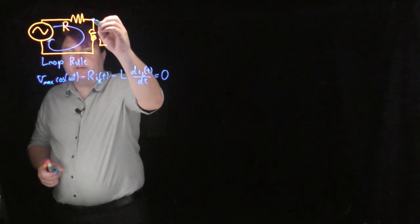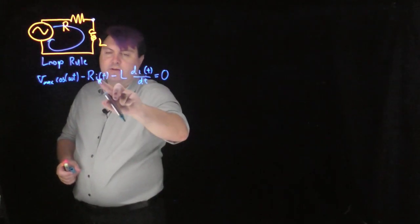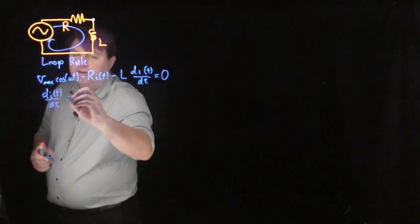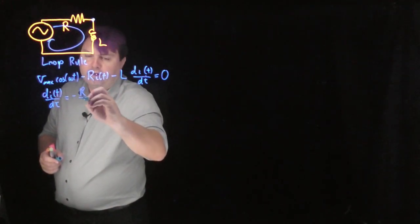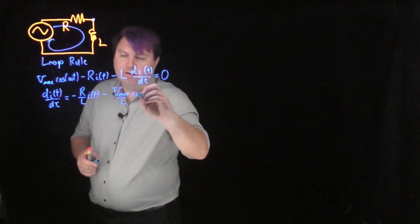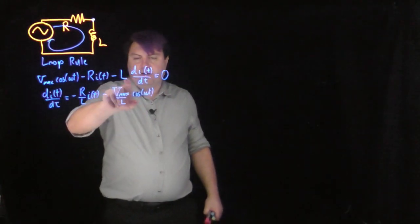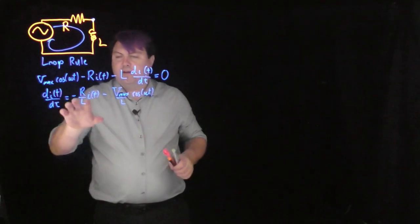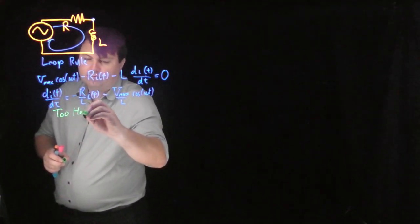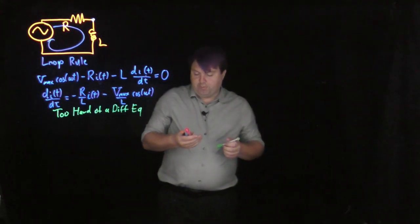Looking at the junction, the current over the resistor and the current over the inductor are the same. But we're in trouble, because the differential equation — dI(t)/dt = −(R/L)·I(t) − (V_max/L)·cos(ωt) — has a cosine term where we'd normally have a constant. This differential equation is too hard, so the loop rule is not going to help us.